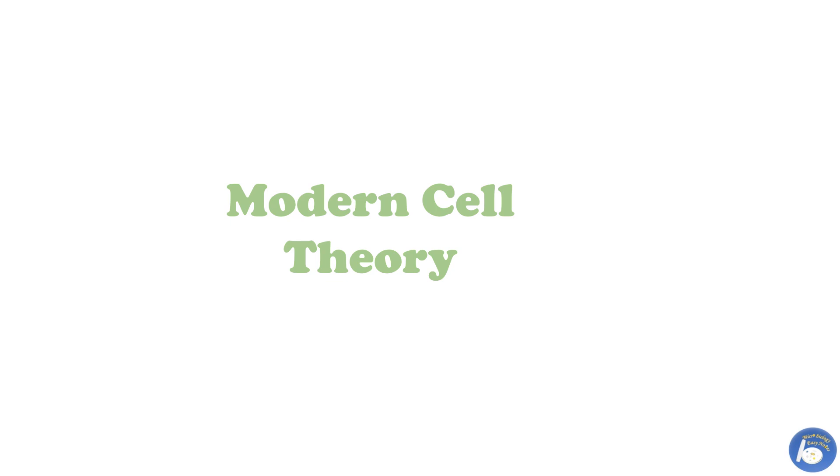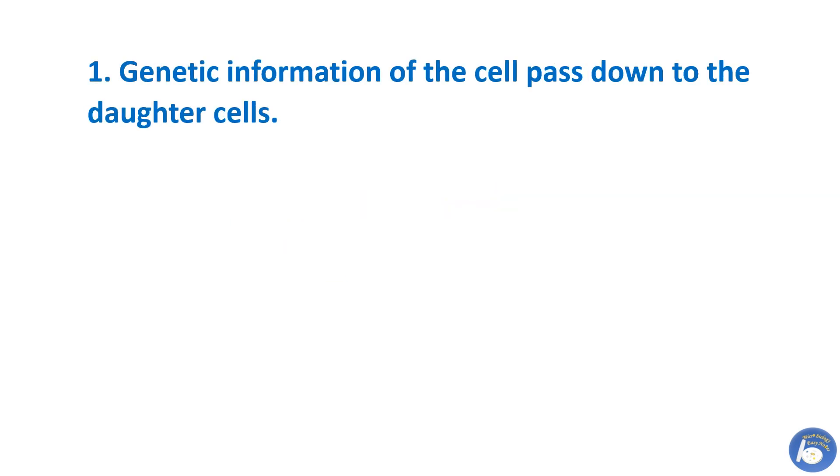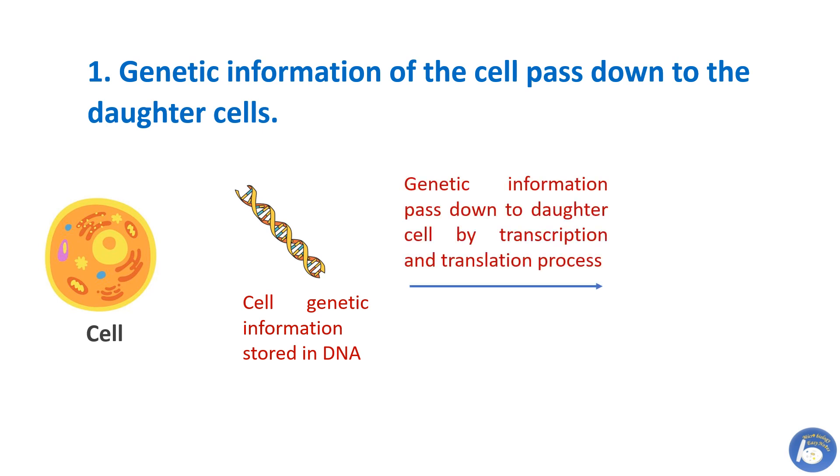With time, new dimensions of research have evolved and other postulates were established in the cell theory. Now it is known as modern cell theory. The first postulate is: genetic information of the cell is passed down to the daughter cells. All genetic information of the cell is stored in DNA, which is transferred to daughter cells by the process of transcription and translation.